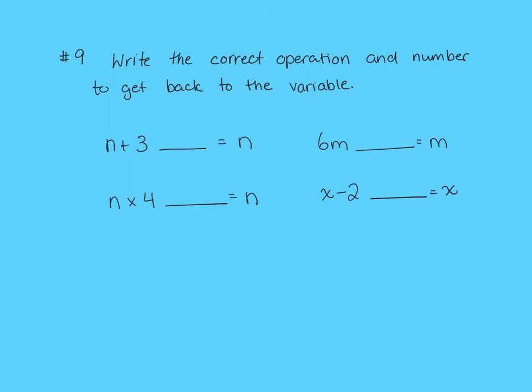Question 9 asks you to write the correct operation and number to get back to the variable. So if we look at n plus 3, the opposite of adding 3 to get us back to n is to subtract 3. If we're multiplying by 4, then the opposite would be to divide by 4. So we're going to put divide by 4. We don't need to put another n there. The same thing goes when we just have the coefficient. Remember, this is code for multiplying as well. So 6m, we're going to divide by 6 because that undoes the multiplication. And when we're subtracting 2, then we're going to add 2. This will basically help you with question number 10 as well. You don't need a separate set of examples and instructions.